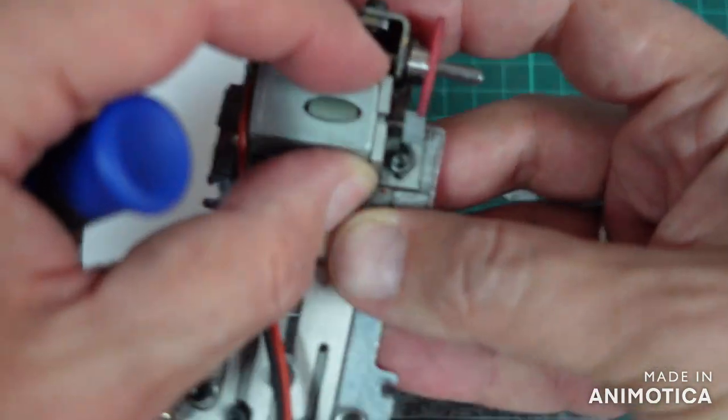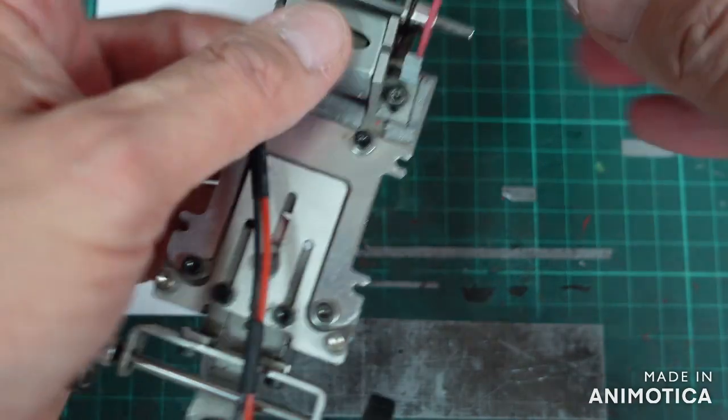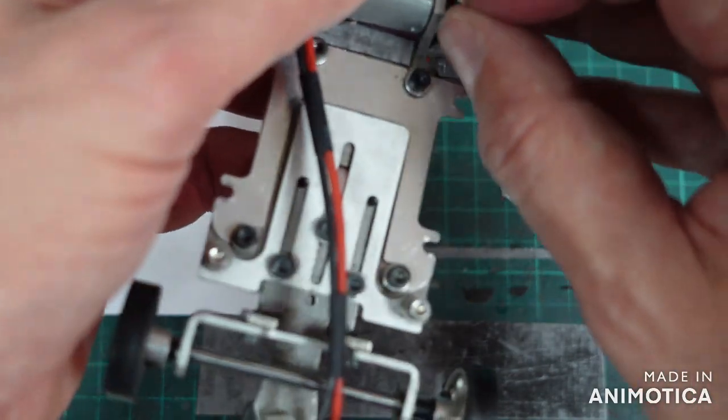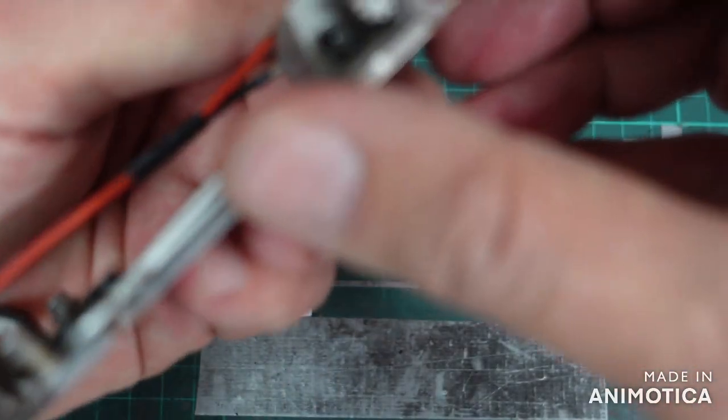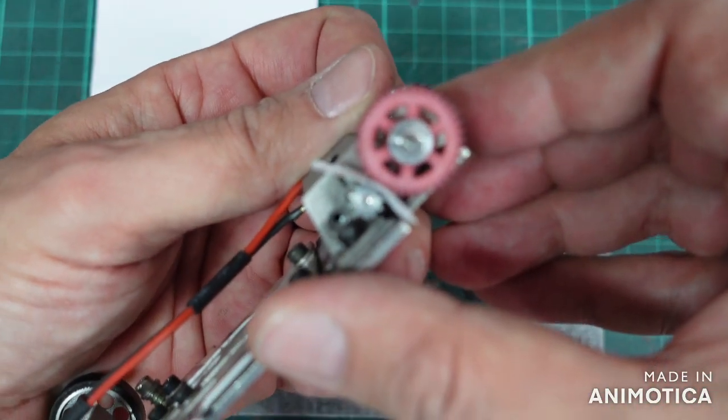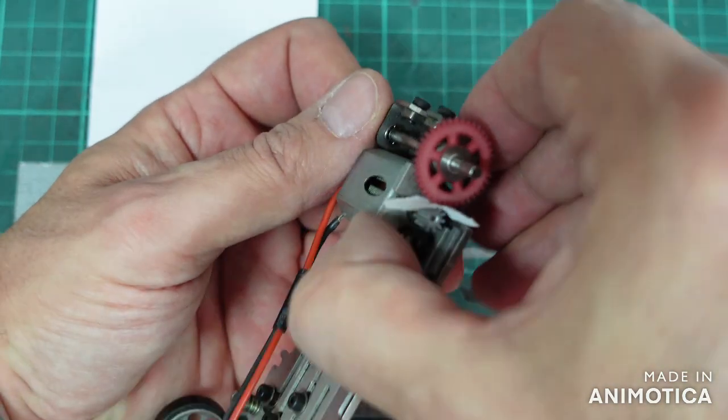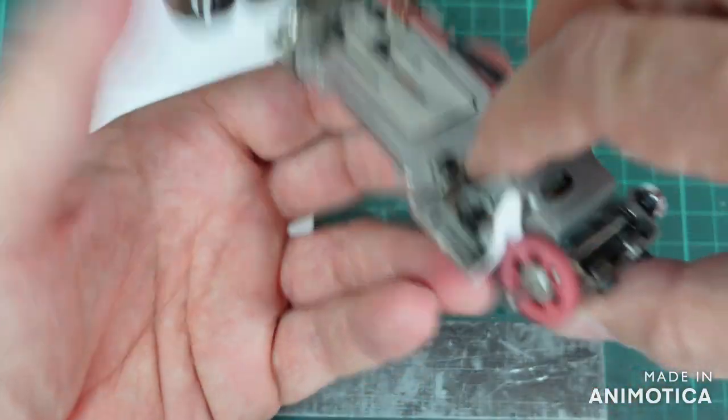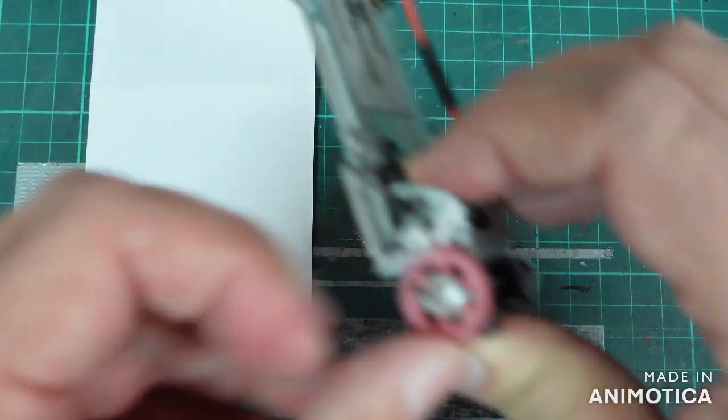Then I put this stripe right in between the pinion and the gear like this. Hope you can see it. And the way I tighten it is I press the motor with the pinion towards the gear like this with a paper stripe in between.